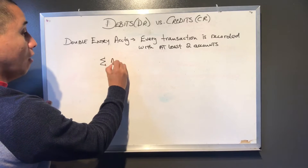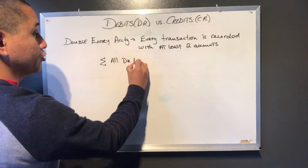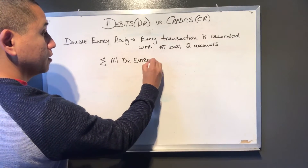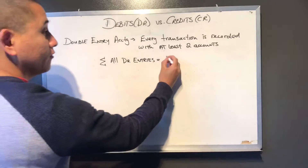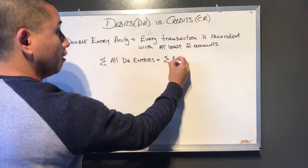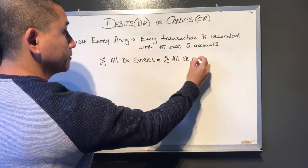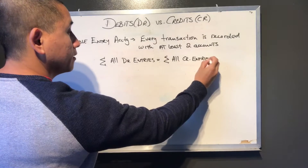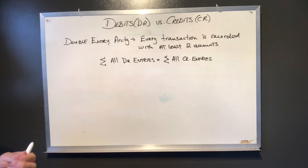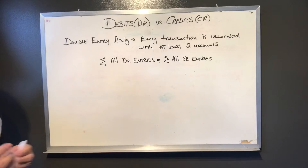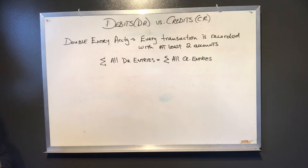The sum of all debit entries must equal the sum of all credit entries. That's one way to ensure that we're always kept in check.